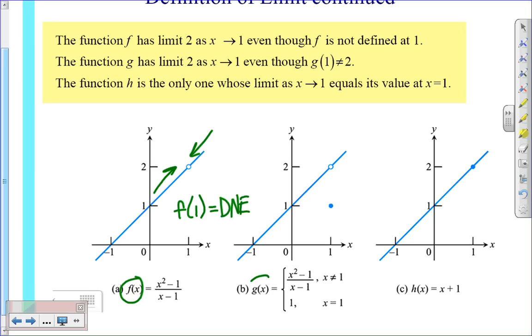In the second example, g of x, we have a piecewise function here. And again, the function g has a limit to as x approaches 1. However, if you notice here, even though the limit as x approaches c of the function g of x is equal to 2, if you look at the value when x is 1, the value is 1. So the value is different than the limit in this example.